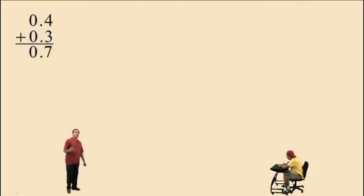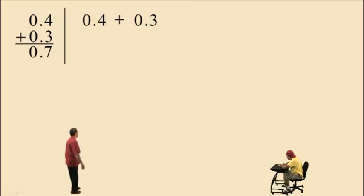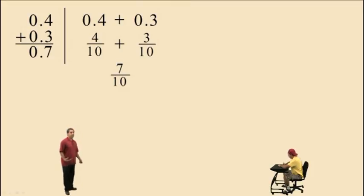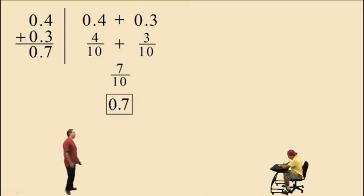Now let's perform the calculation by first converting the decimals to fractions. We have four tenths plus three tenths, which is seven tenths as a decimal — zero point seven. Same answer.